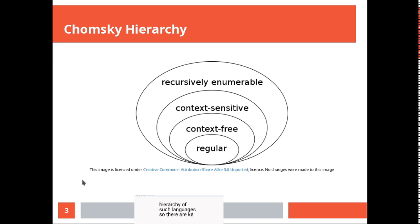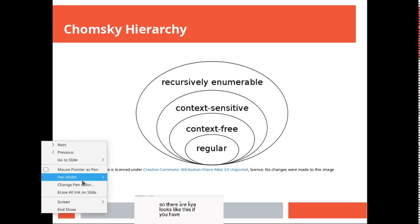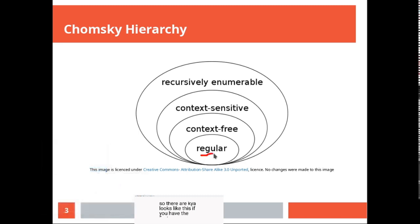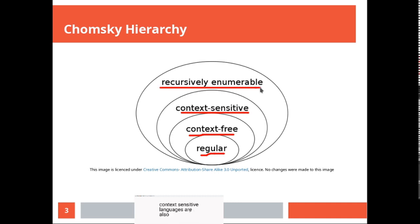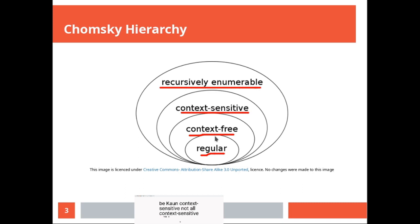The hierarchy looks like this. The first languages we will be talking about are regular languages. All regular languages are also context-free languages, and all context-free languages are context-sensitive as well. All context-sensitive languages are also recursively enumerable, but the reverse is not true. Not all recursively enumerable languages are context-sensitive, not all context-sensitive are context-free, and not all context-free languages are regular.